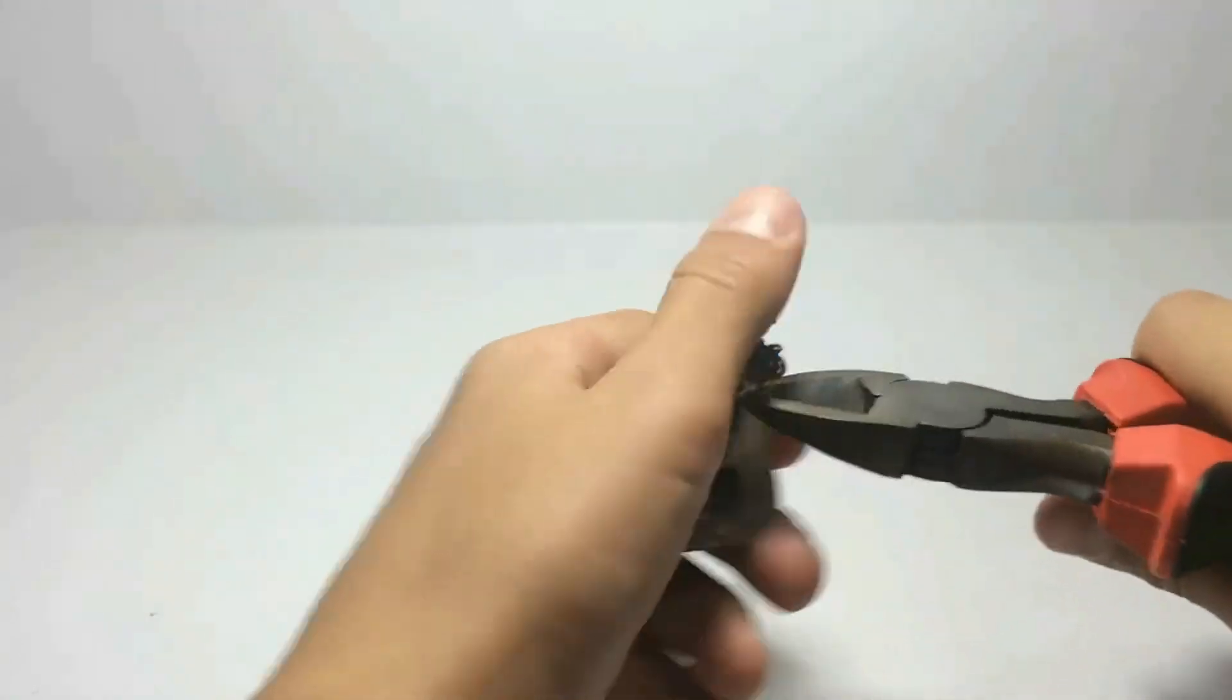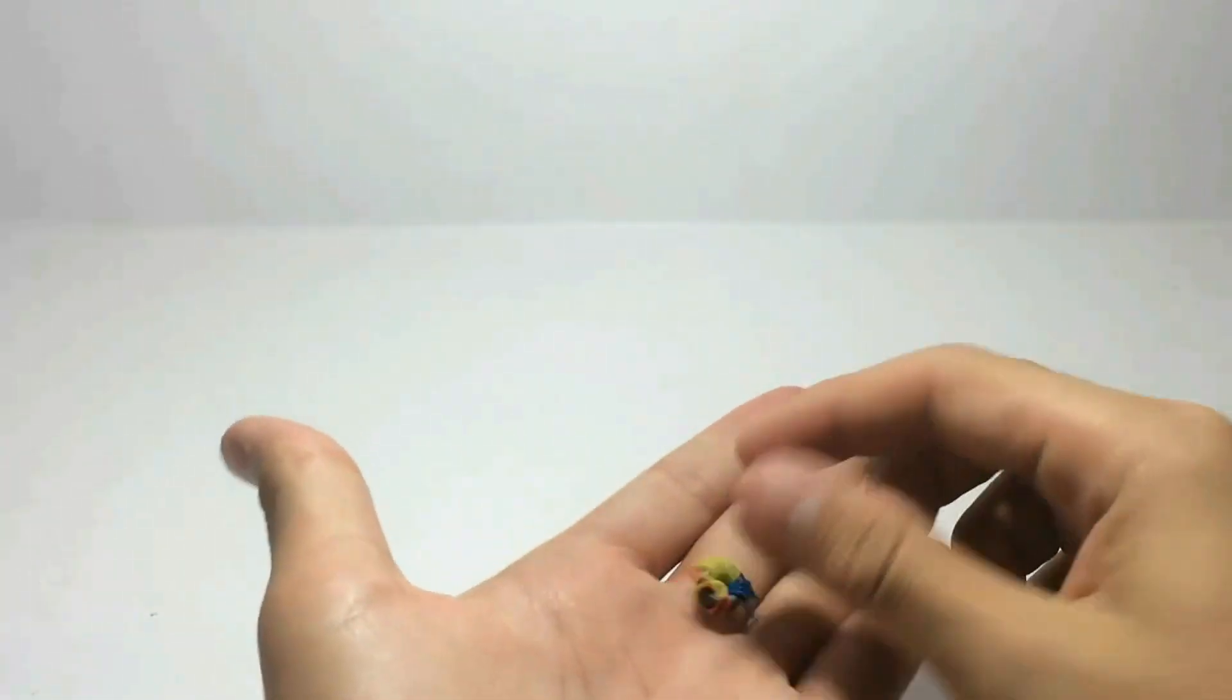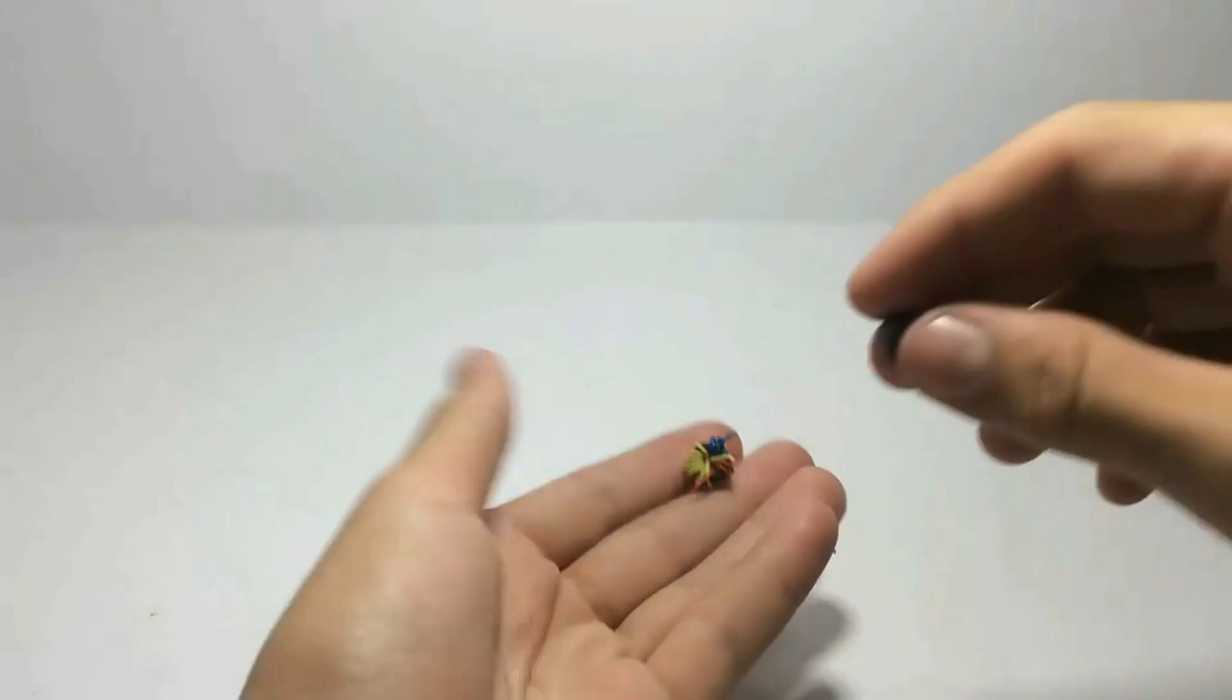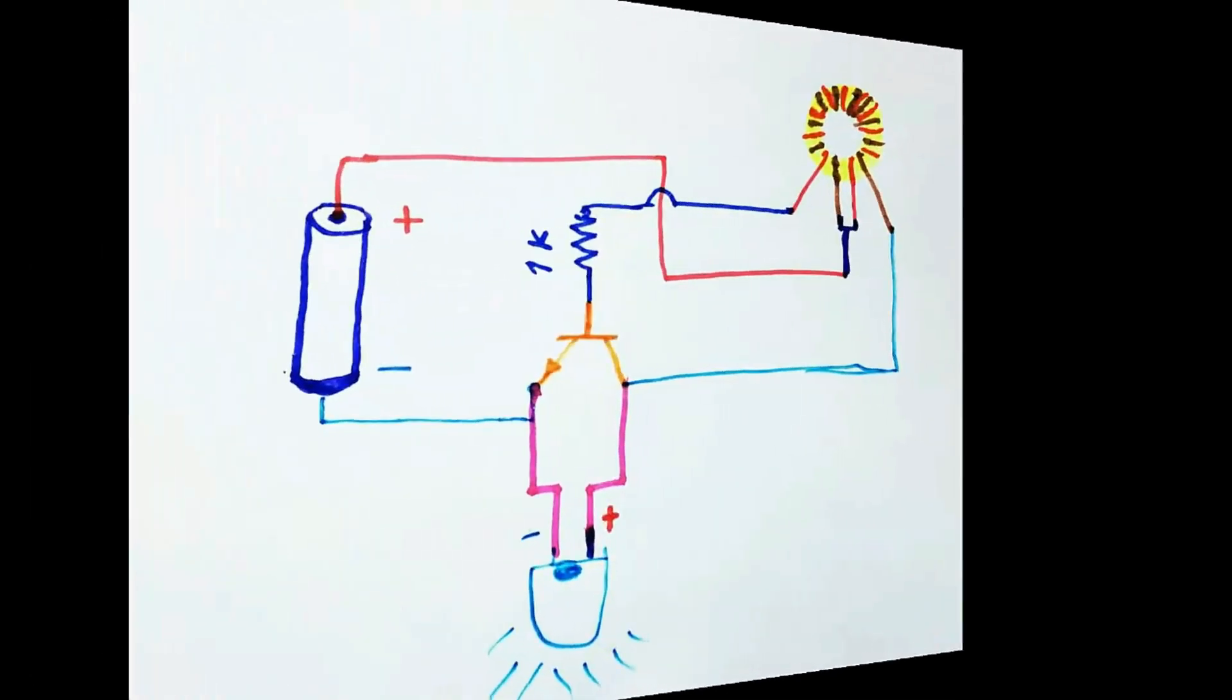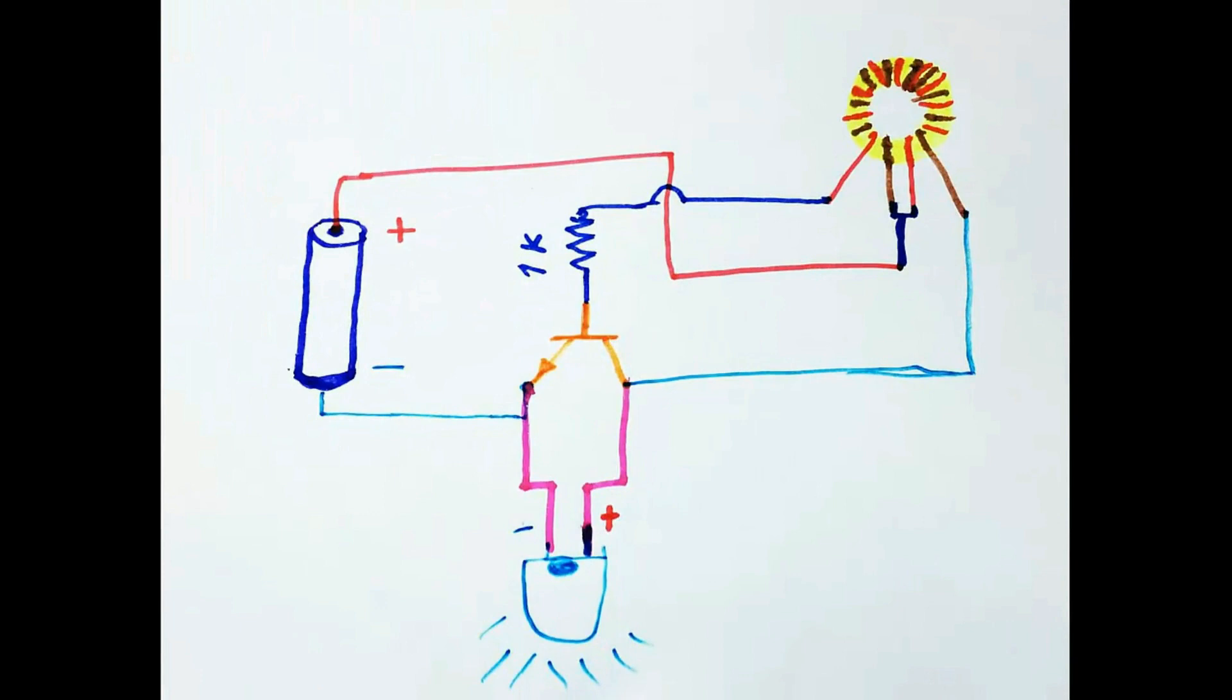And now you have your ferrite core. It's very simple. Now here's the schematic. The schematic is very simple.